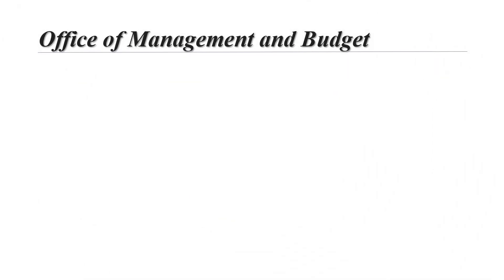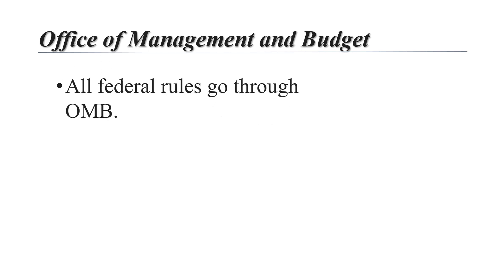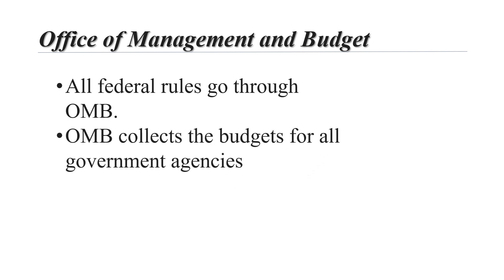The Office of Management and Budget is an agency within the executive office of the president with control over the federal budget and regulations. Presidents use the OMB to conduct most of the oversight. All federal rules must go through the OMB. They collect the budgets for all government agencies, which allows the president to emphasize their own priorities and policy goals in the federal budget submitted annually to Congress.